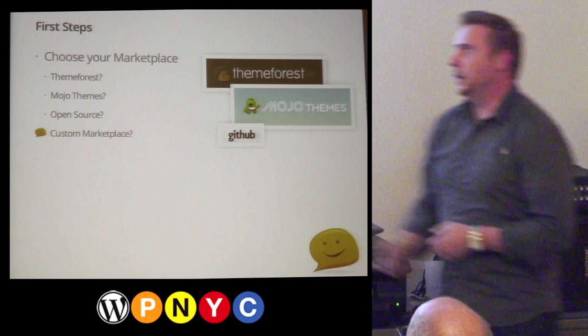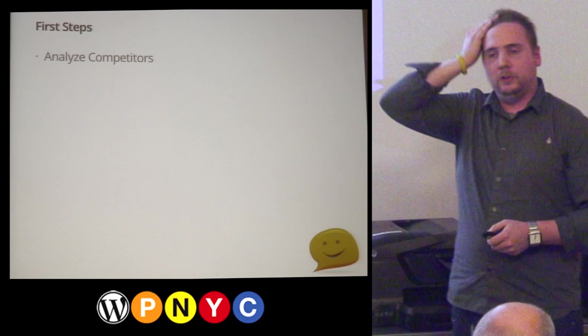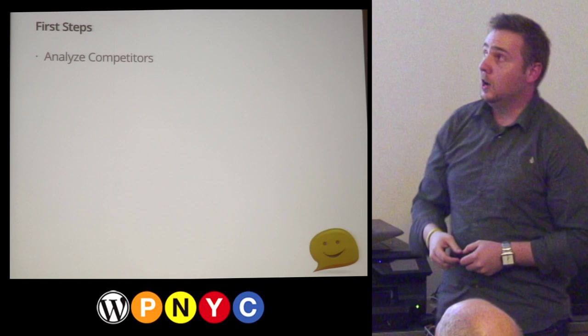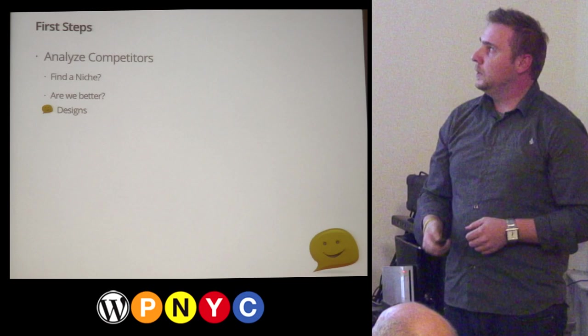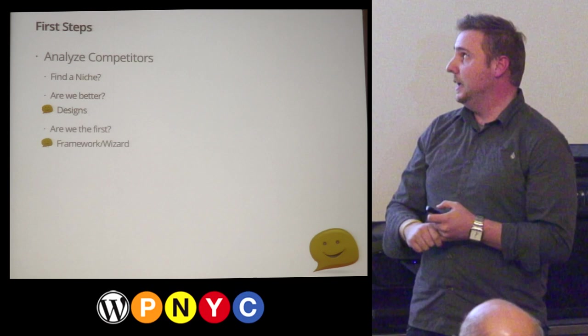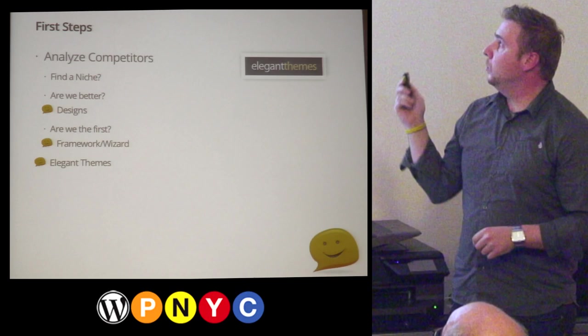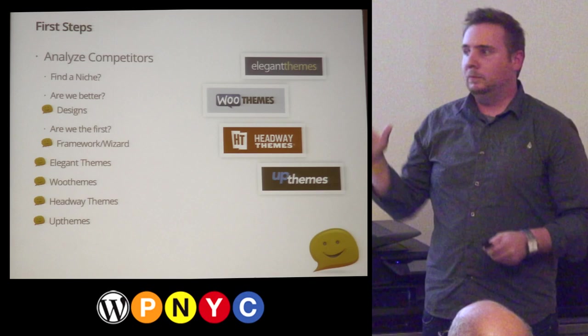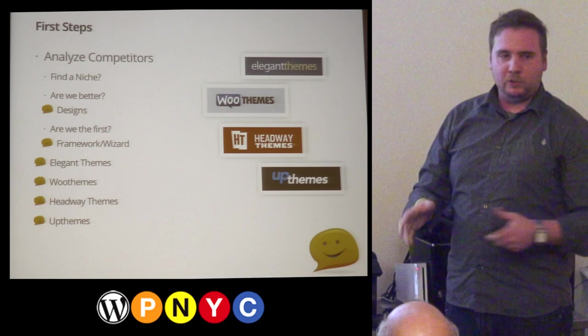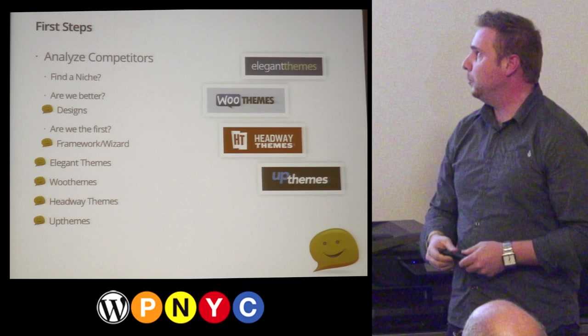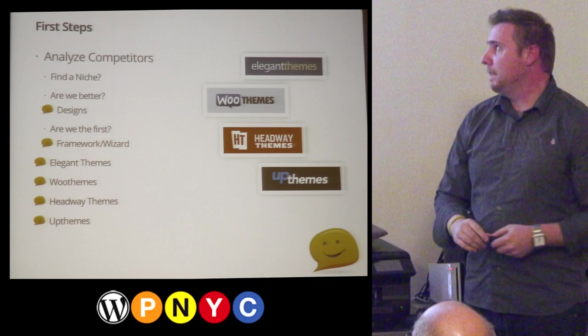We had to analyze our competitors, figure out who we wanted to mimic and find the pros and cons of what they were doing, and find our niche. We found it in the idea that we would be better designed and would be the first to have this wizard UI and functionality. We found four main competitors: Elegant Themes and Woo Themes were the design guys we wanted to beat on design, while Headway and Up Themes had great frameworks we wanted to go above and beyond.